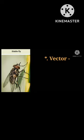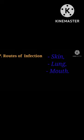Vector: insect vector. Routes of anthrax infection — there are three common routes of anthrax infection, each with different signs and symptoms. They are skin, lung, and mouth.